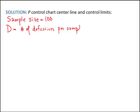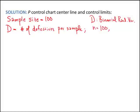D is a familiar random variable. Since every item sampled is either defective or not defective, D is a binomial random variable. D being binomial requires two parameters: sample size n, which is 100, and the proportion of defectives for each sample, which changes. For now, let's call this p-hat — the proportion of defectives in a given sample.